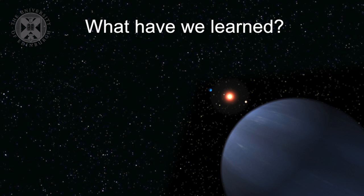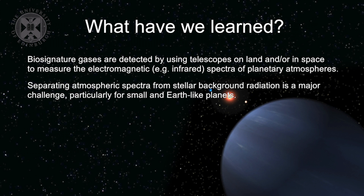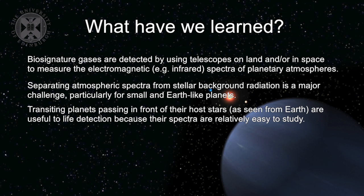So what have we learned? We've learned that biosignature gases are detected by using telescopes on land or in space to measure the electromagnetic spectra of planetary atmospheres particularly in the infrared. We've learned that separating atmospheric spectra from stellar background radiation is a major challenge particularly for very small and Earth-like planets where the light being given off is very little and much less than the starlight being given off by the parent star. We've learned that transiting planets passing in front of their host stars are useful to life detection because their spectra are relatively easy to study.